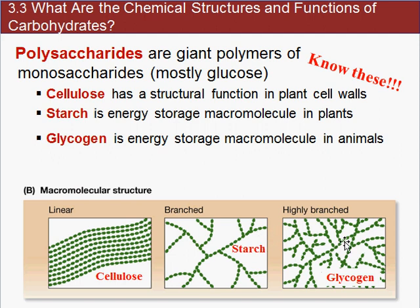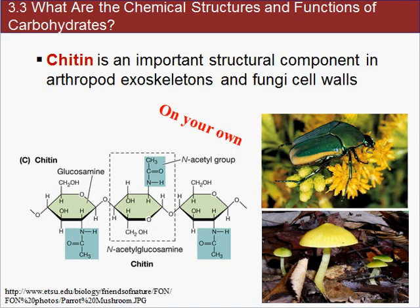Starch and cellulose are both from plants. Glycogen is also highly branched, and it is the energy storage molecule for sugar in animals — sugar gets stored as glycogen in the liver. One last carbohydrate that's also a polysaccharide is chitin. It's an important structural component of the exoskeleton of insects and other arthropods, as well as fungal cell walls. All those repeated subunits together — thousands of them — create these exoskeletons and cell walls.